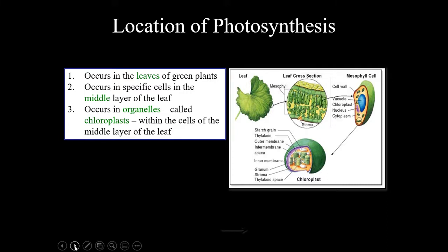Photosynthesis occurs in the leaves, especially in specific cells in the middle layer of the leaf, and occurs in organelles called the chloroplasts.